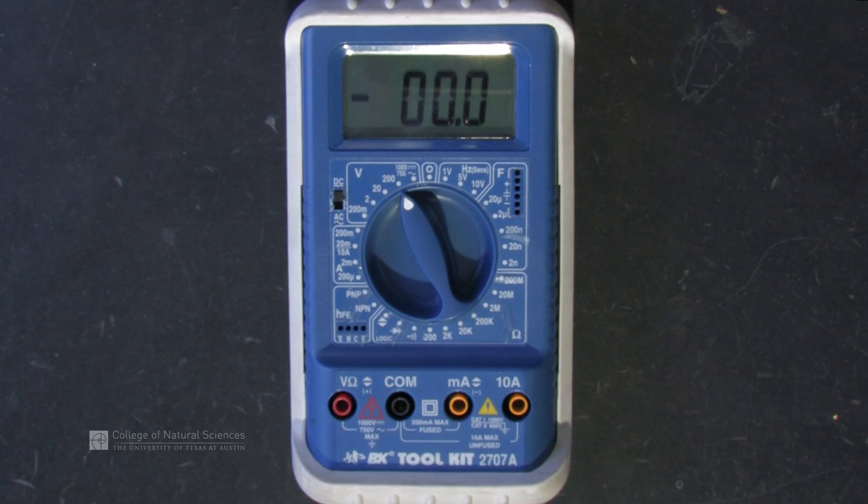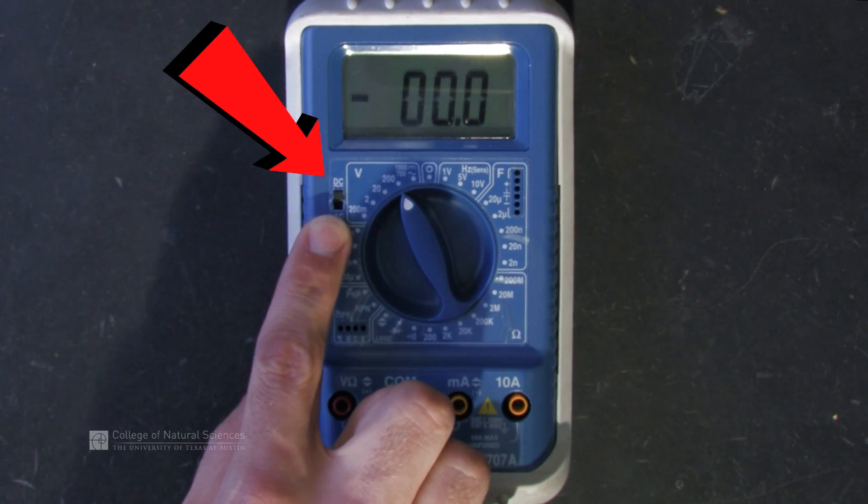Next, check the digital multimeter to make sure that it measures the right current type. This can be either direct current or alternating current. Most likely the early labs will use DC current, so make sure that DC is selected.